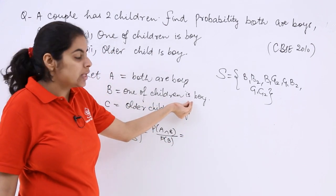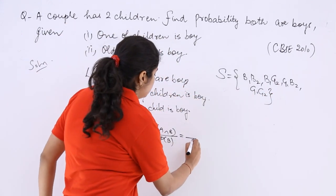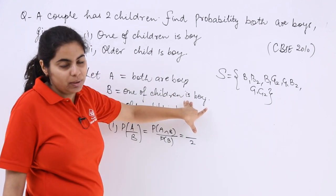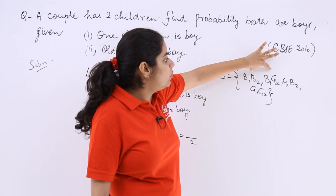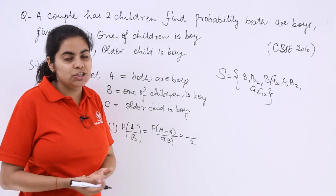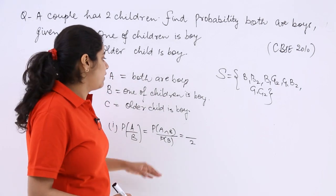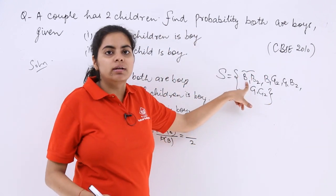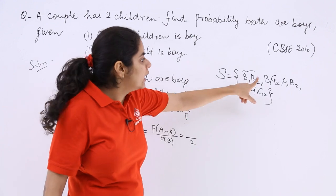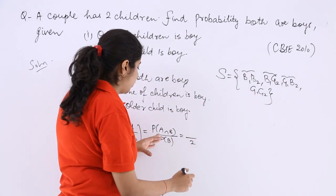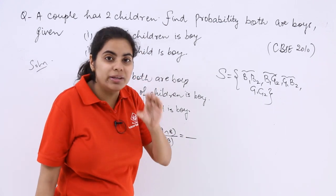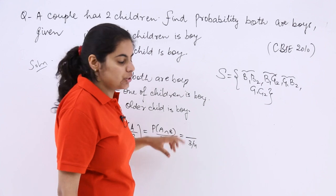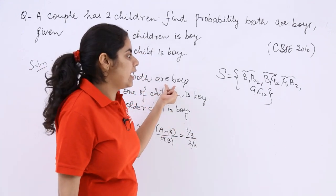One of the children is a boy covers cases BB, BG, and GB — that is 3 out of 4 cases, so P(B) = 3/4. For the numerator, P(A intersection B) means both are boys AND one of the children is a boy. Both being boys also satisfies one child being a boy, so the intersection is just the one case BB, giving P(A intersection B) = 1/4.